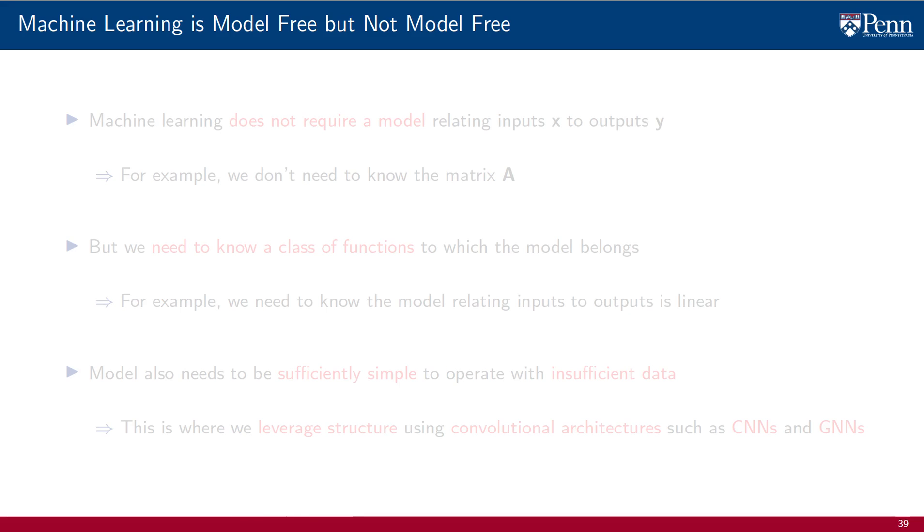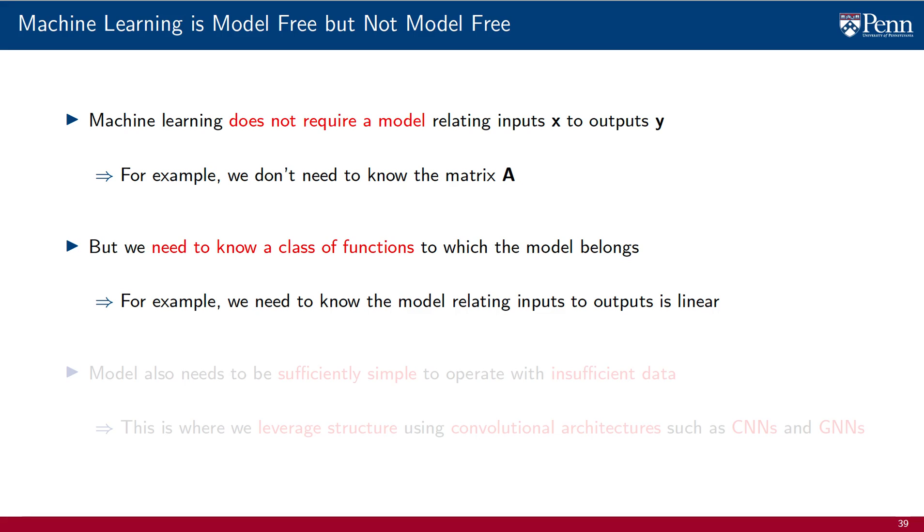The point for us to remember as we move forward is that machine learning is model-free, but not really model-free after all. It is true that ML does not require a model relating inputs X to outputs Y. This was the whole motivation for introducing ML. In the examples we consider here, we do not need to know the matrix A. But we do need to know a class of functions to which the model belongs. At the very least, some rough hypotheses of which parametrizations are adequate for the problem of interest. In the examples here, we succeeded at learning when our hypothesis that the model is linear matched the reality of the input-output model. We failed when model and parametrization were mismatched.